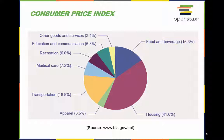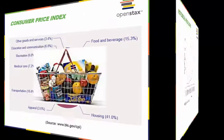The Bureau of Labor Statistics measures the price of purchasing those goods and services, then compares the changes in this price year over year. Of the eight categories used to generate the Consumer Price Index, housing is the highest at 41%. The next highest, transportation, at 16.8%, is less than half the size of housing. Other goods and services and apparel are the lowest, at 3.4% and 3.6% respectively.